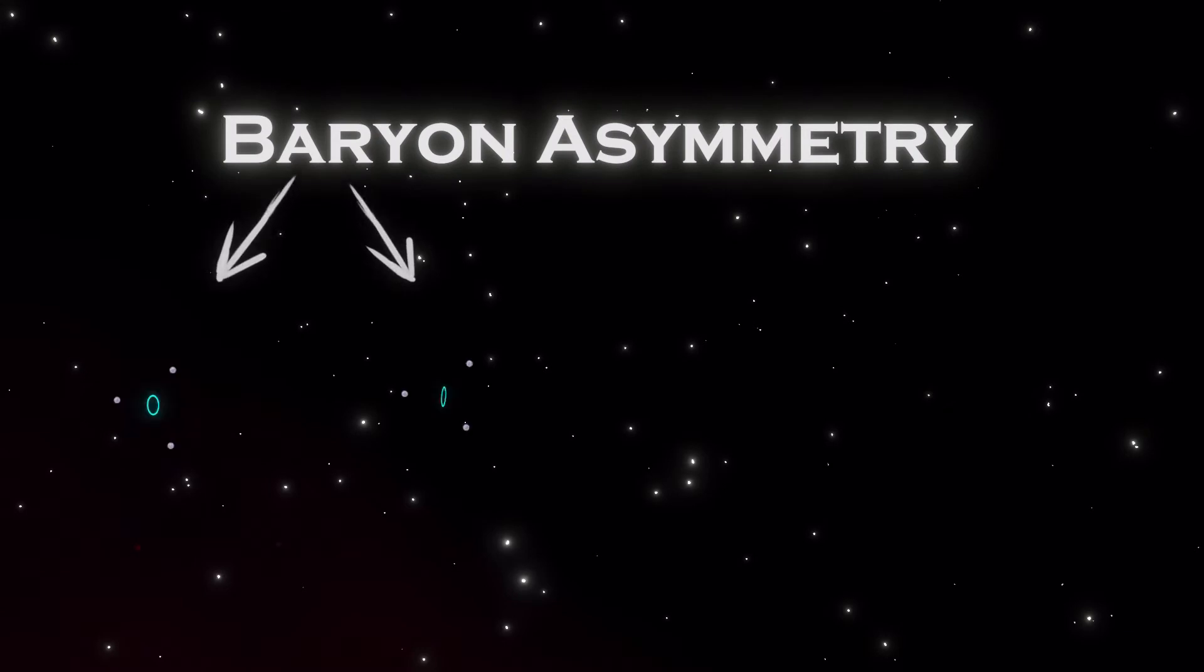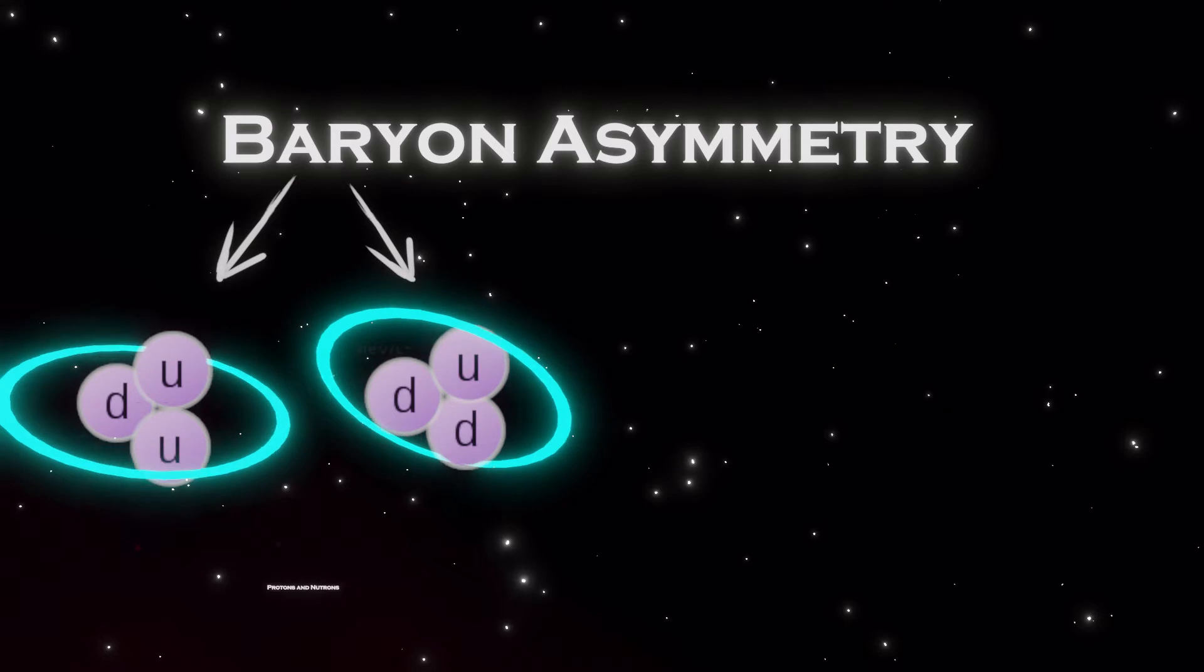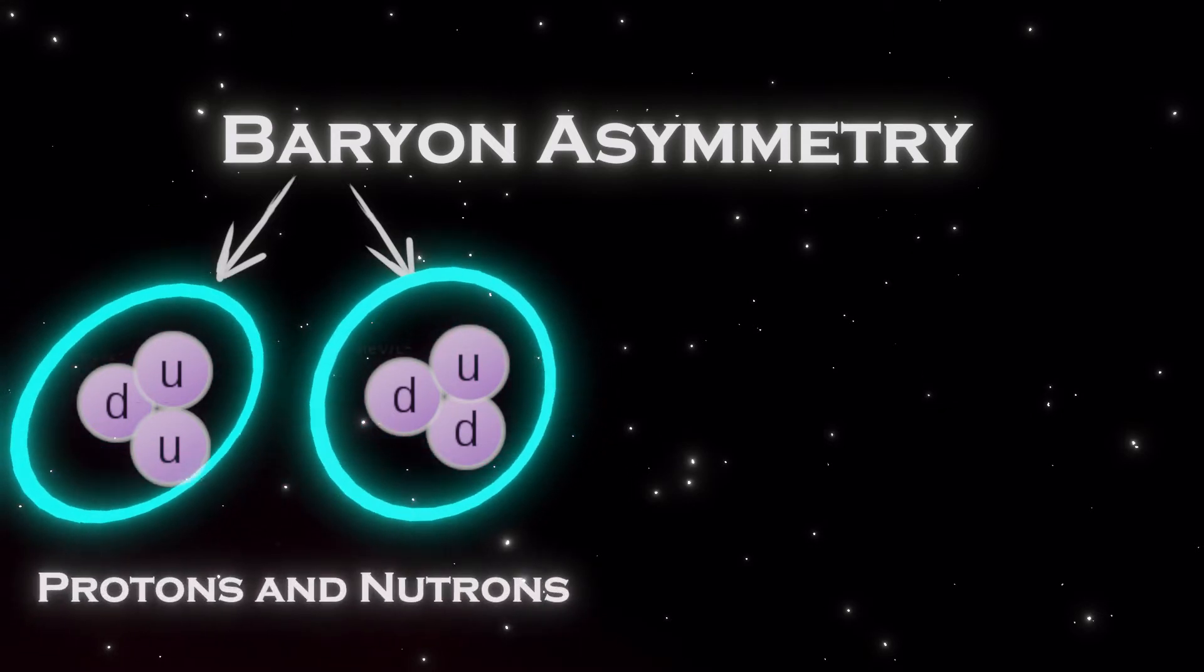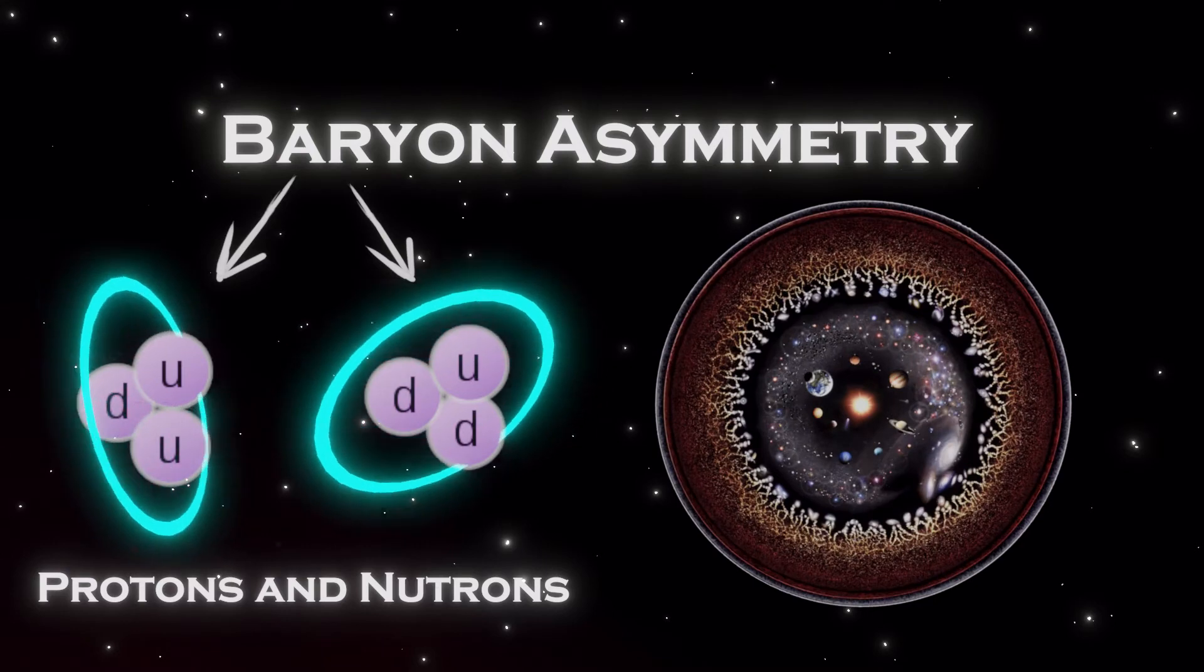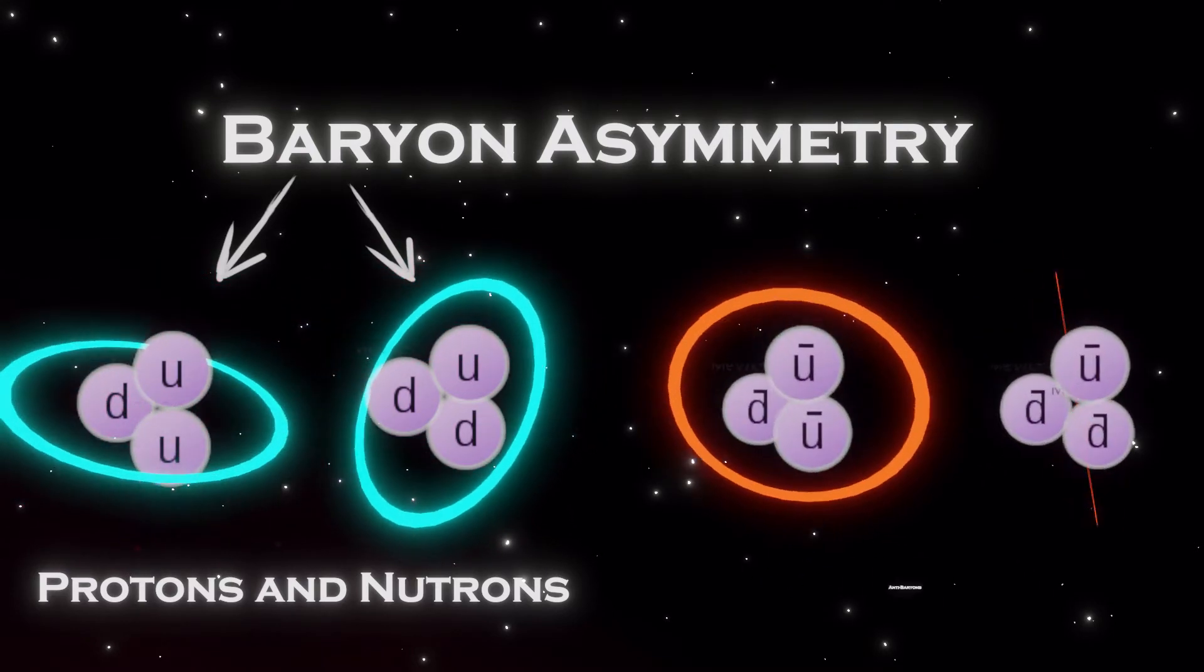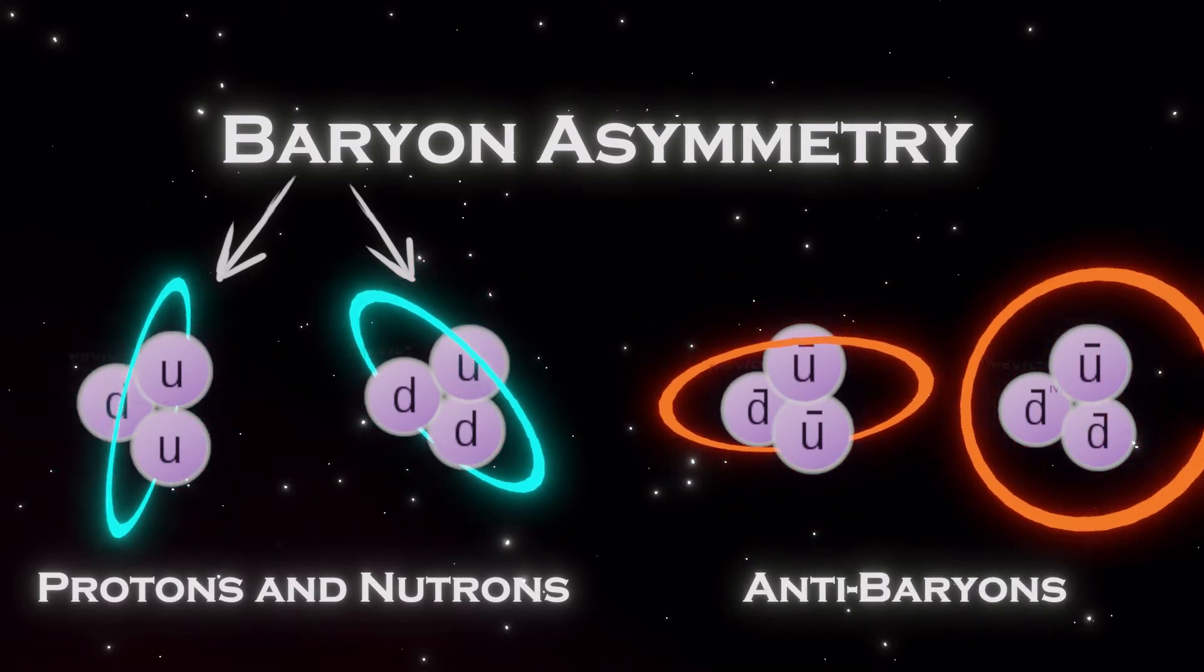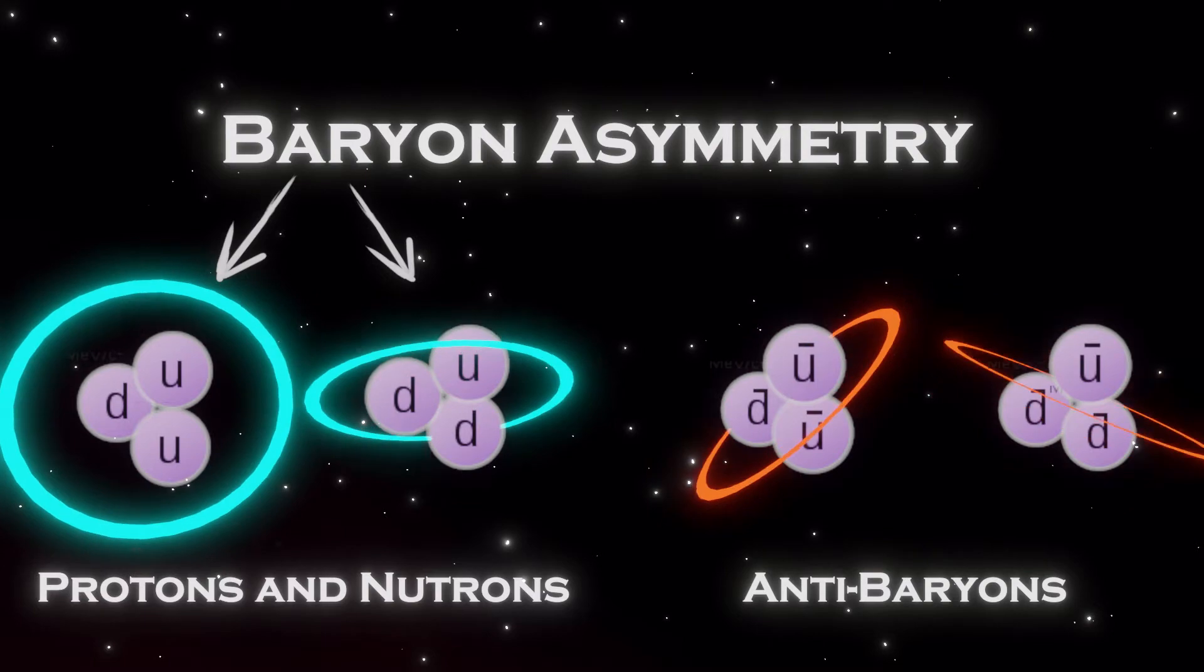Baryons are particles that are made up of an odd number of quarks, such as our protons and neutrons, and they are what make up almost all of the regular matter that we can see in the universe. However, there should have been equal amounts of anti-baryons as well, and that just doesn't exist as per our observations of the universe.